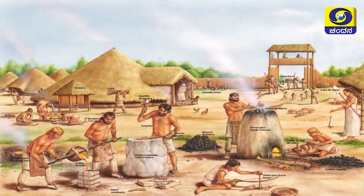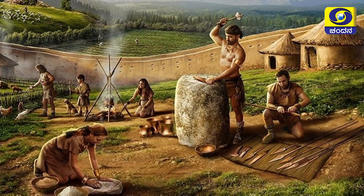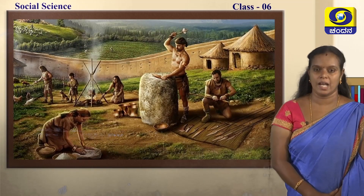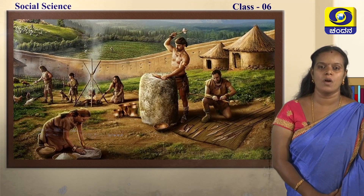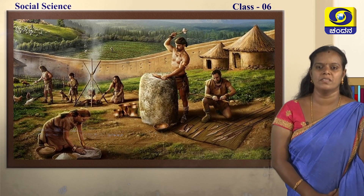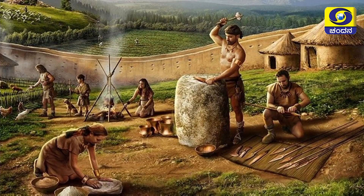Look at this picture — you can see how the men of the Metal age involved themselves in the preparation of different metals like copper, bronze, and iron. Here you can find how the man is involved in the preparation of bronze vessels. You can see the bronze vessels, bronze tools, and spears being made. We can also find agricultural activities, farming, use of fire, and rearing of animals in this picture.